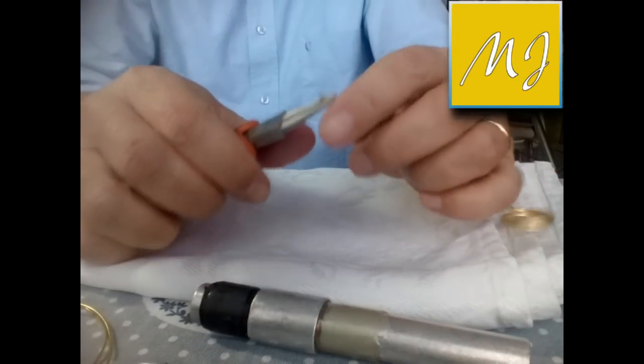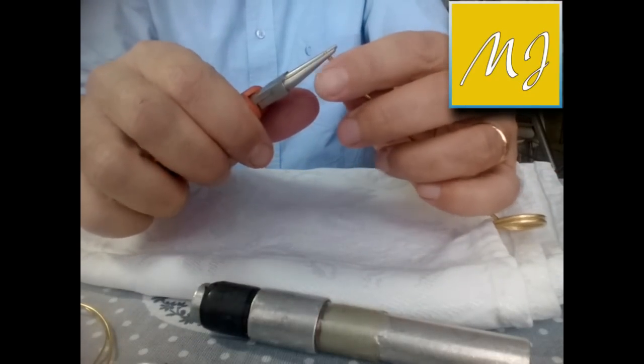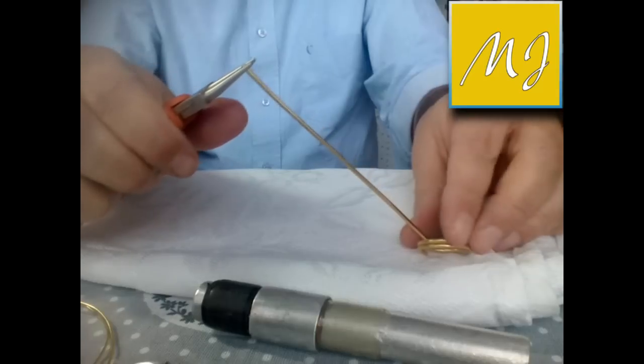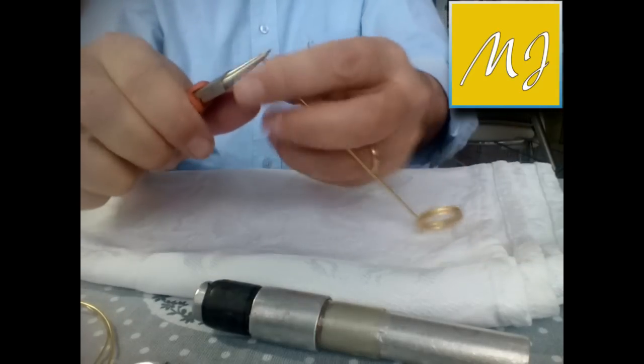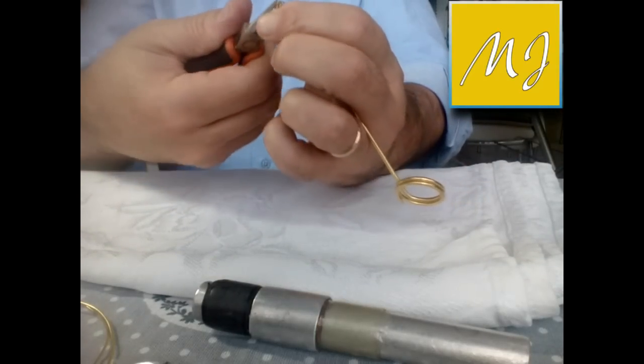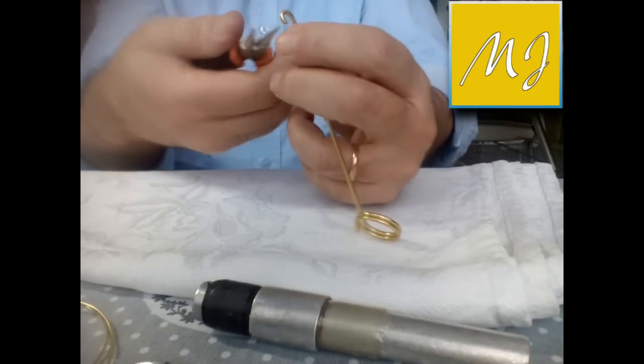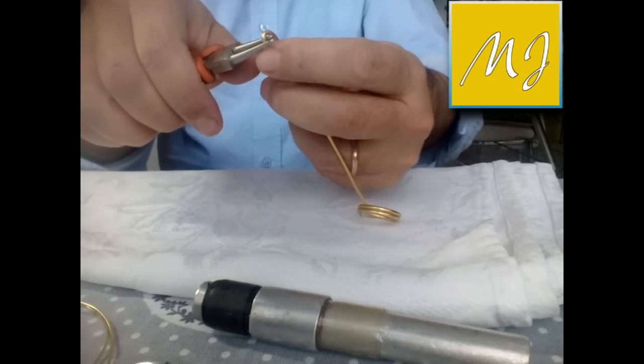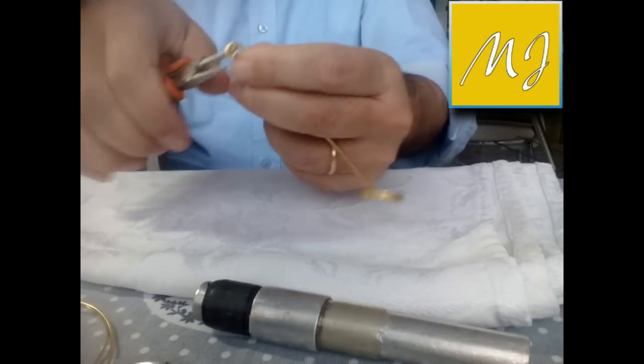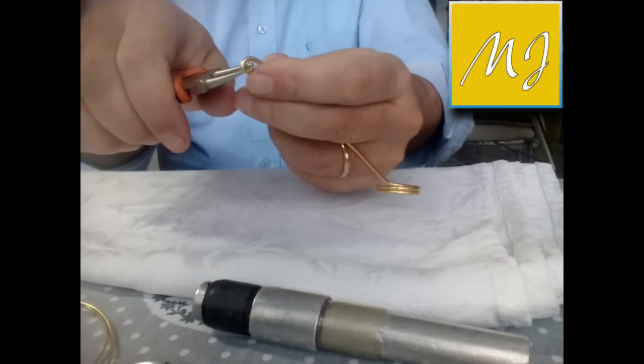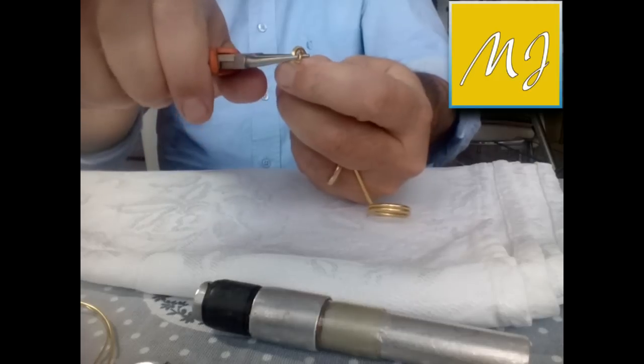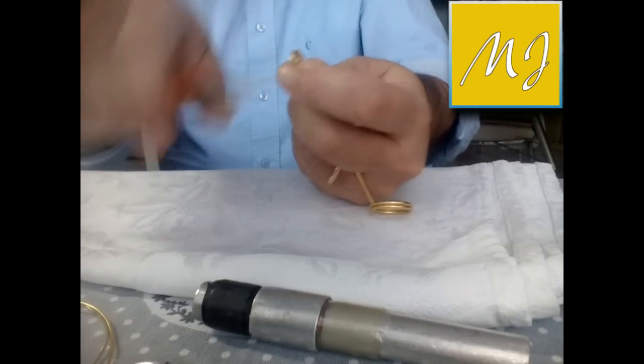In questo caso non importa se si segna un po' il filo perché le pinze a becchi tondi hanno la tendenza di segnare il filo d'alluminio che è molto morbido. Ma come dicevo non ha molta importanza perché in questo progetto la spirale verrà poi battuta col martello, quindi non saranno più visibili eventuali segni.